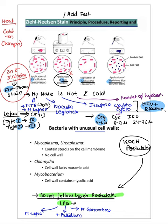Some bacteria have unusual cell walls. Ureaplasma and Mycoplasma contain sterols in the cell membrane and have no cell wall. Mycoplasma is also known as PPLO — pleuro-pneumonia-like organism. Chlamydia lacks muramic acid but is important. Mycobacterium contains mycolic acid, which is responsible for its acid-fastness.